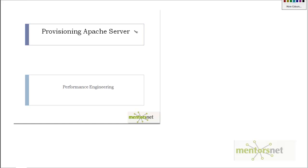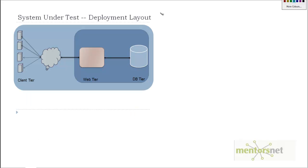Hello, welcome back. In this video we will learn how to provision the Apache server from Amazon Web Services. This is how our system under test deployment layout is going to look like. This is the web tier — Amazon EC2 will provision you a machine, and on top of that machine